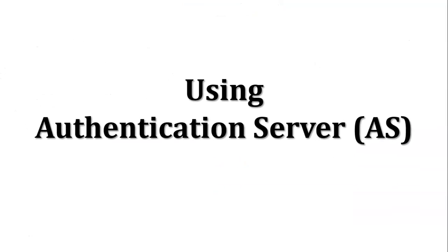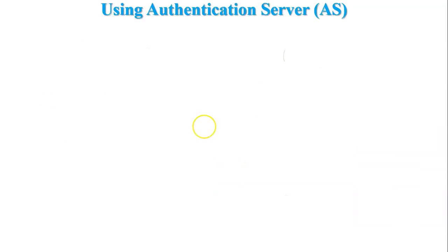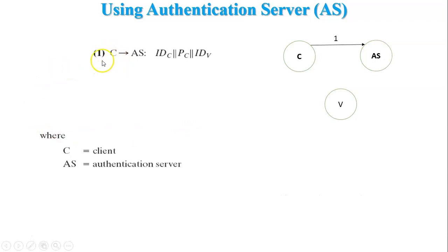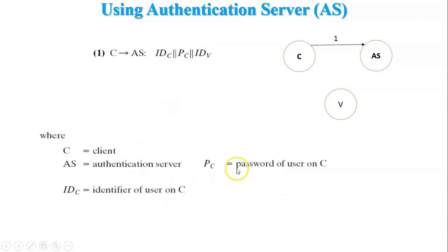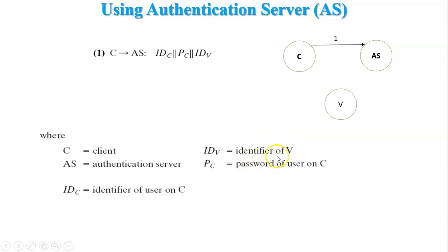In Kerberos version 4.0 using authentication server only, consider a client C and a server V. The client wants to access services from server V. First, the client logs into its machine and sends a request to the authentication server containing IDC (identity of user C), PC (password of user C), and IDV (identity of server V). This is the login process where user ID and password are sent to the authentication server for authentication.